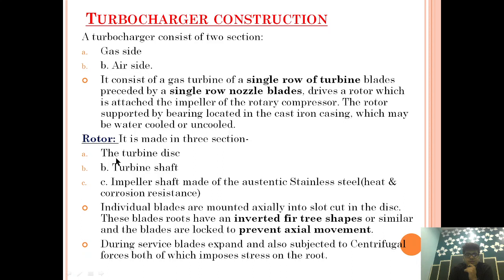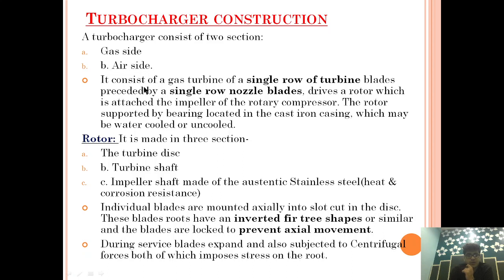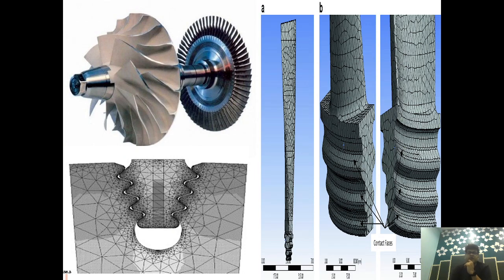The turbocharger is made in three sections: turbine discs, turbine shaft, and impeller shaft. The impeller shaft is made of austenitic stainless steel for heat and corrosion resistance. Individual blades are mounted axially into slots in the discs. The blade roots have an inverted firtree shape. The blades are locked to prevent axial movement during service. Blades expand and are also subject to centrifugal force, both of which impose stress on the root.